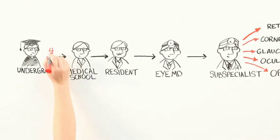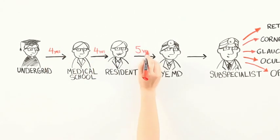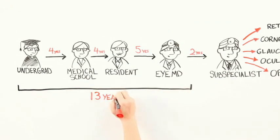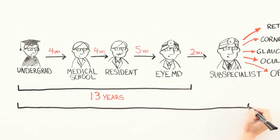As you can see, to become an ophthalmologist or an MD, it takes a significant amount of time to become an expert. If you were counting, 13 years to become an ophthalmologist and 15 years to become a subspecialist.